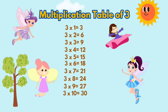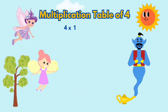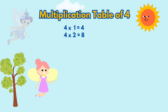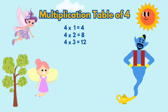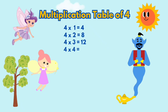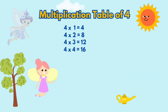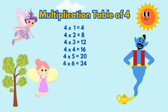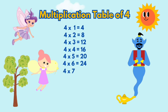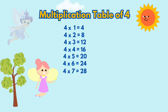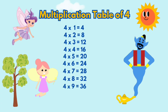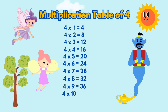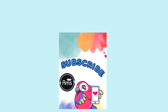3-10's a 30. 4-1's a 4, 4-2's a 8, 4-3's a 12, 4-4's a 16, 4-5's a 20, 4-6's a 24, 4-7's a 28, 4-8's a 32, 4-9's a 36, 4-10's a 40.